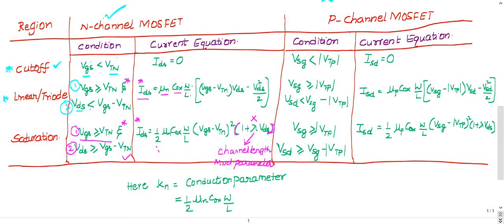For P-type MOSFET, the formulas are the same except the subscript suffixes reverse: VGS becomes VSG, and IDS becomes ISD. The threshold value is taken as modulus everywhere in P-type. Everything else is the same — just the first and second subscripts interchange. You can cross-check by taking a screenshot.